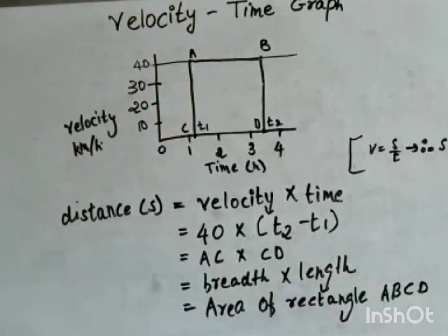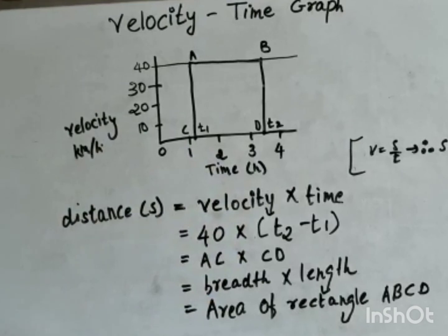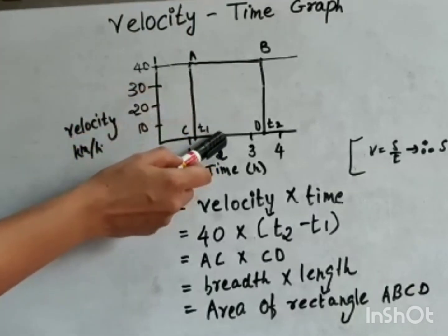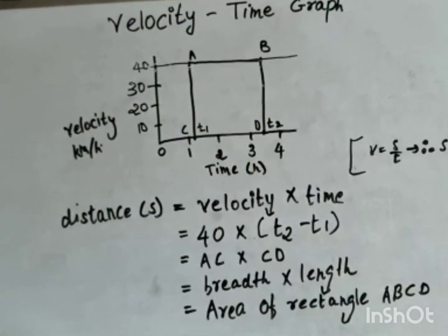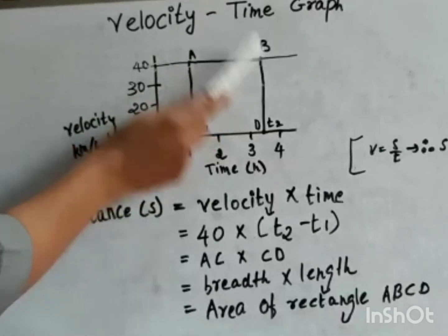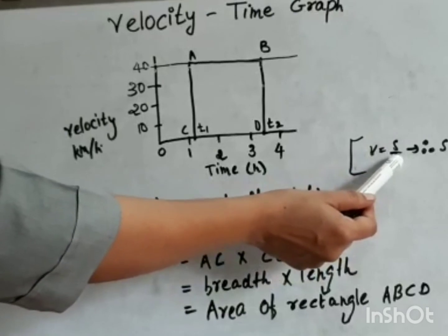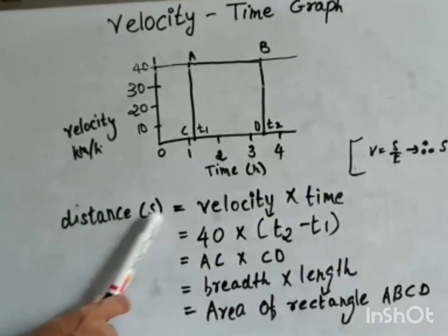Now here is the velocity-time graph, where time is on the x-axis and velocity is on the y-axis, with time in hours and velocity in km/h. Suppose an object is moving with uniform velocity of 40 km/h — at 1 hour, 2 hours, 3 hours, and 4 hours, velocity remains 40 km/h. To find the distance traveled from A to B: velocity = distance / time, so distance = velocity × time, that is s = v × t.